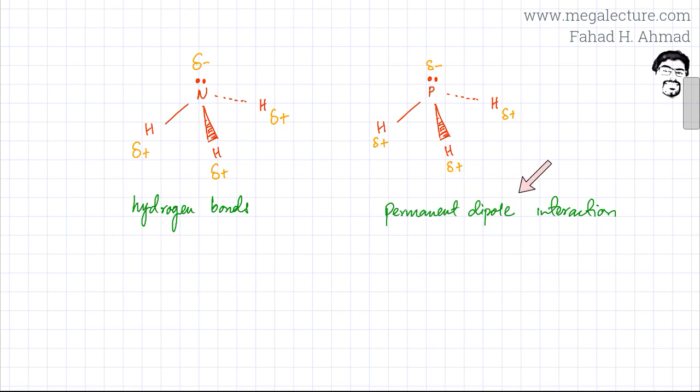In PH3, you have simple permanent dipole interaction, whereas in NH3, two molecules have hydrogen bonds between them. Hydrogen bonds are simply a stronger version of permanent dipole interaction. PH3 has dipoles, but NH3 has stronger dipoles.